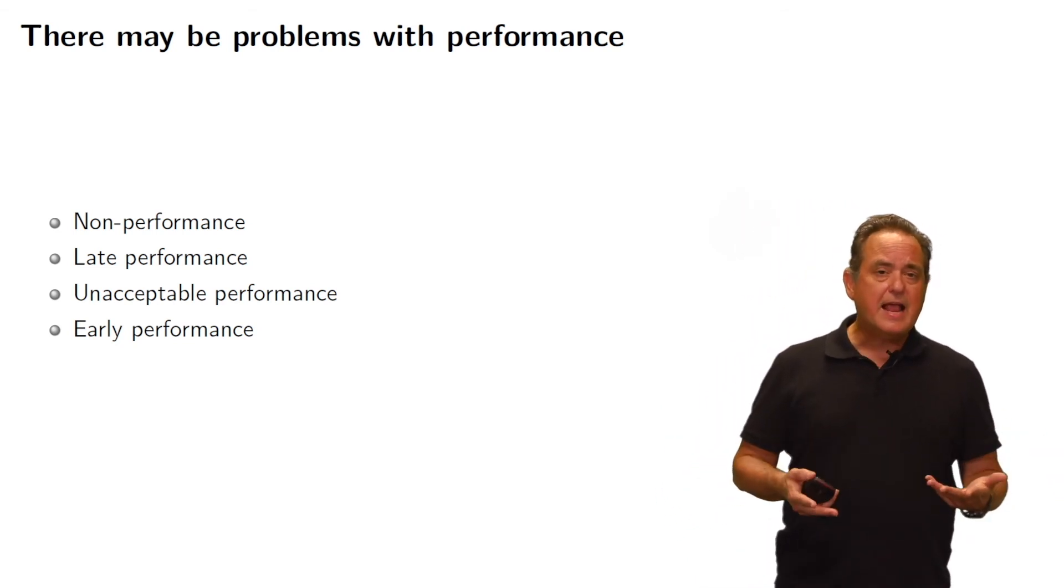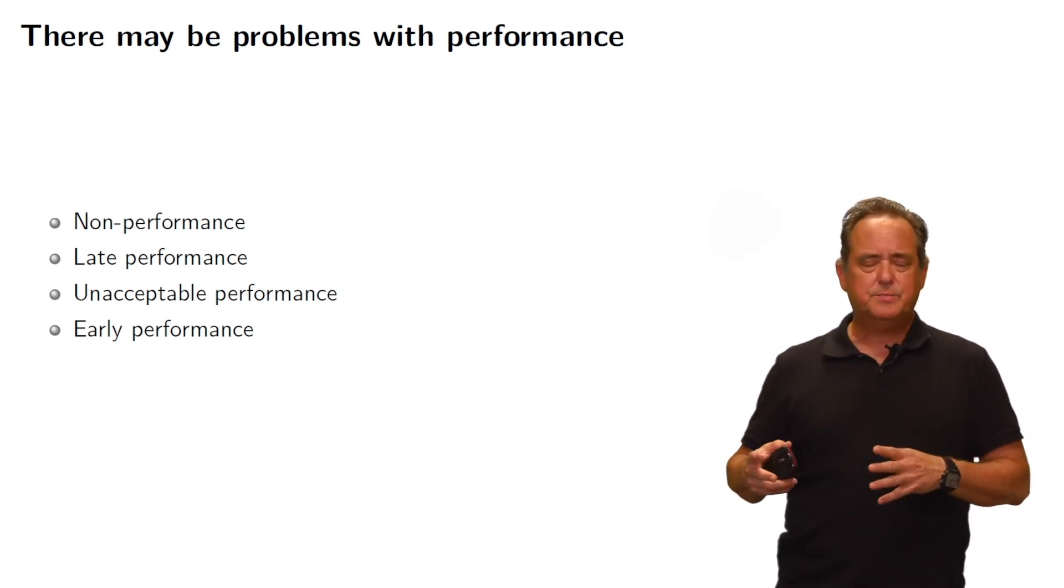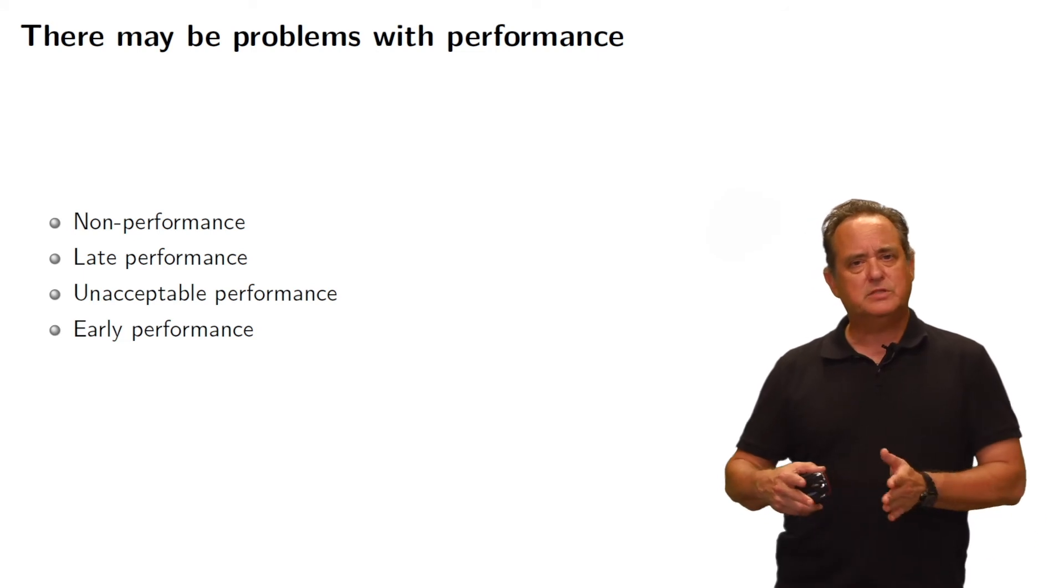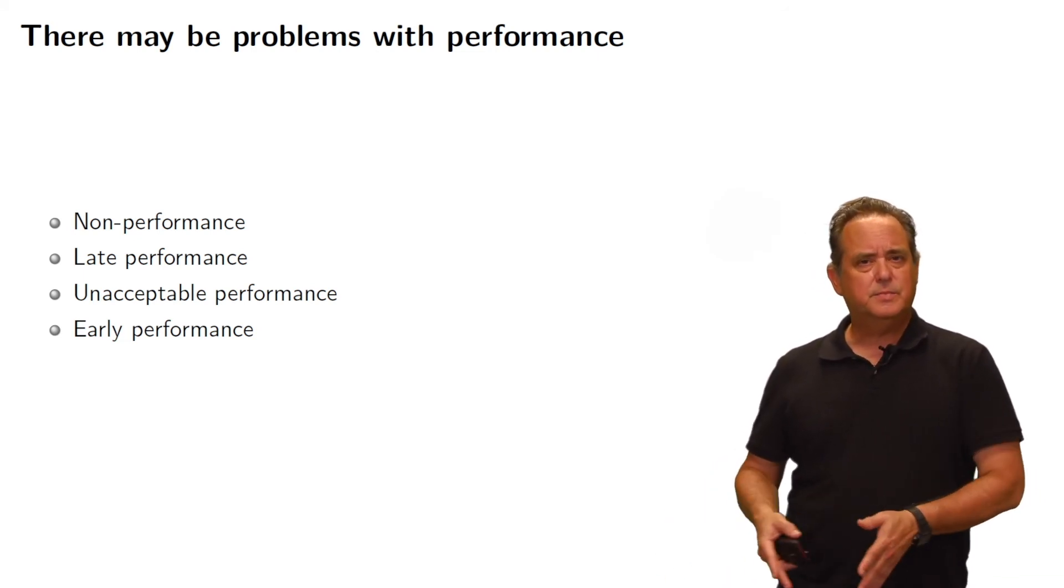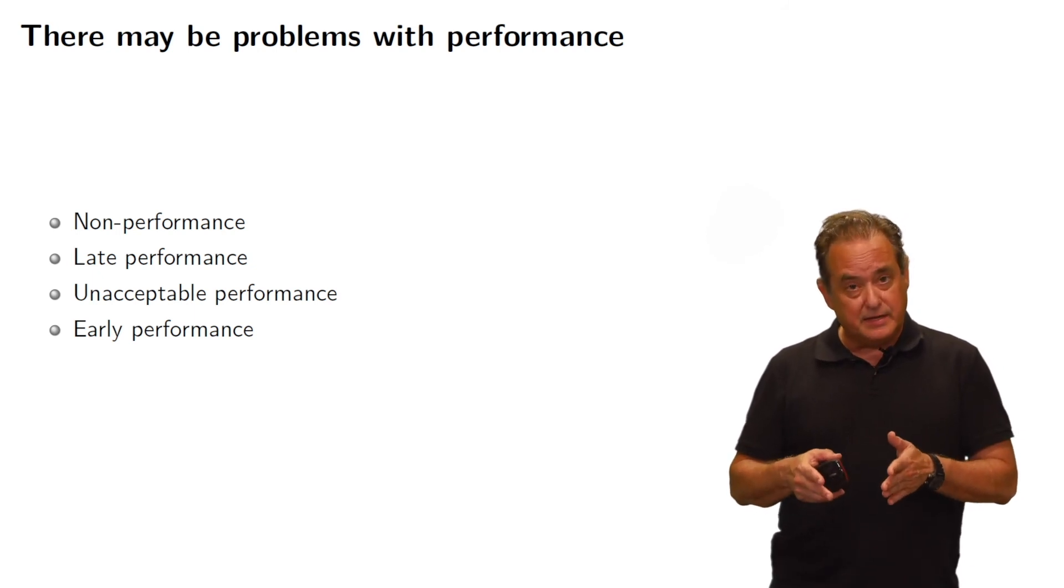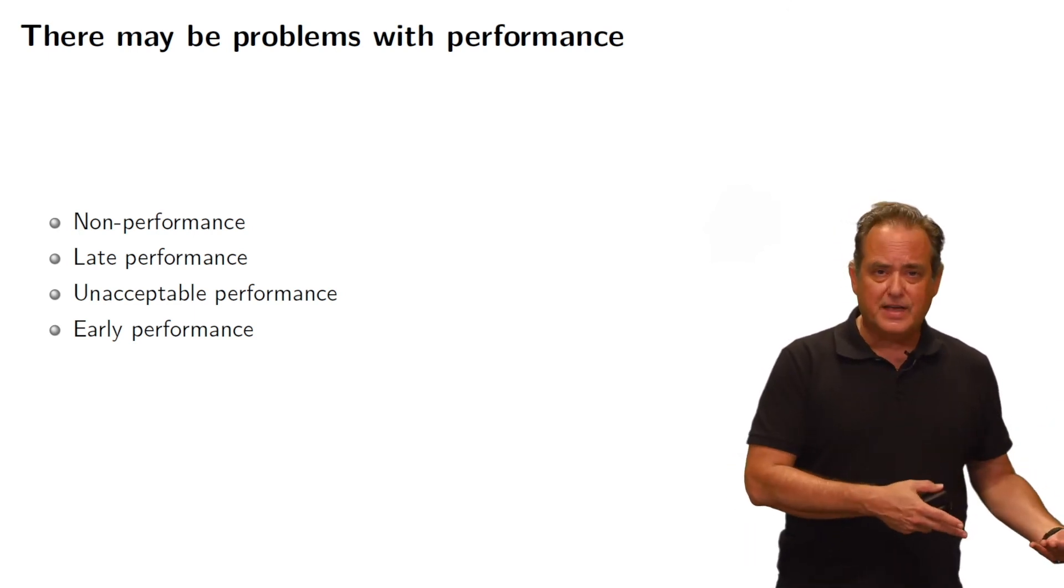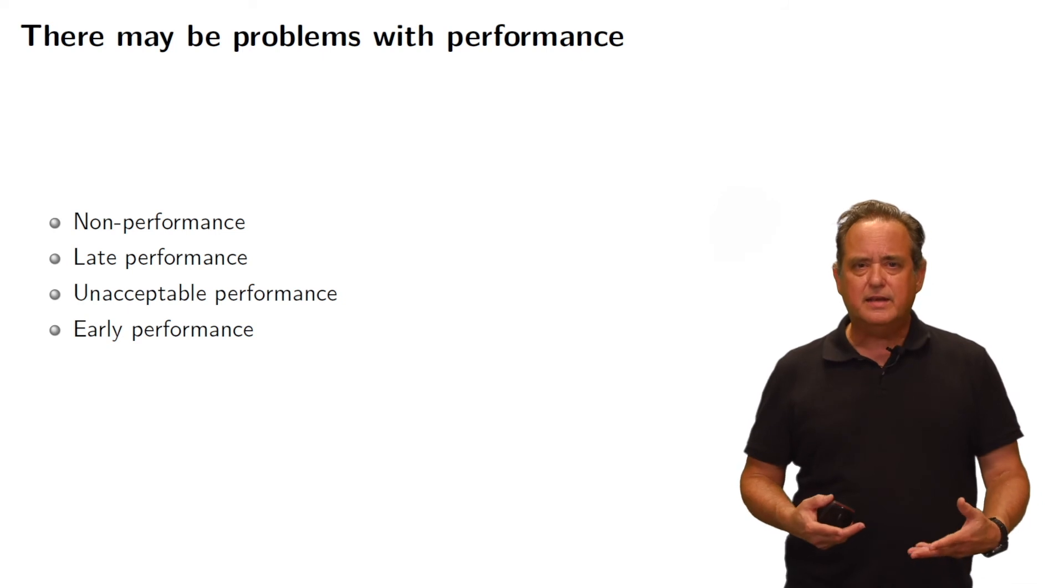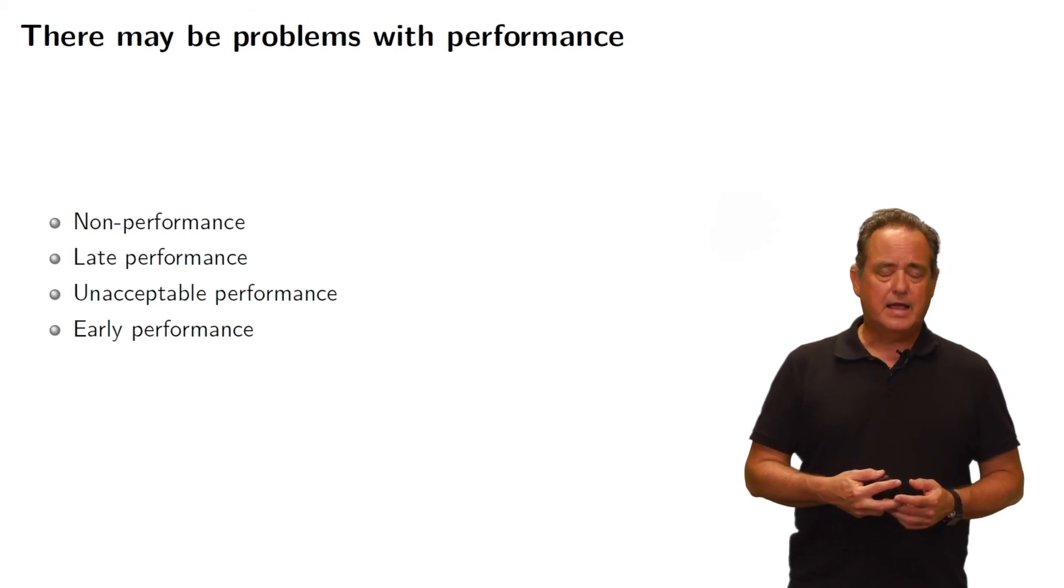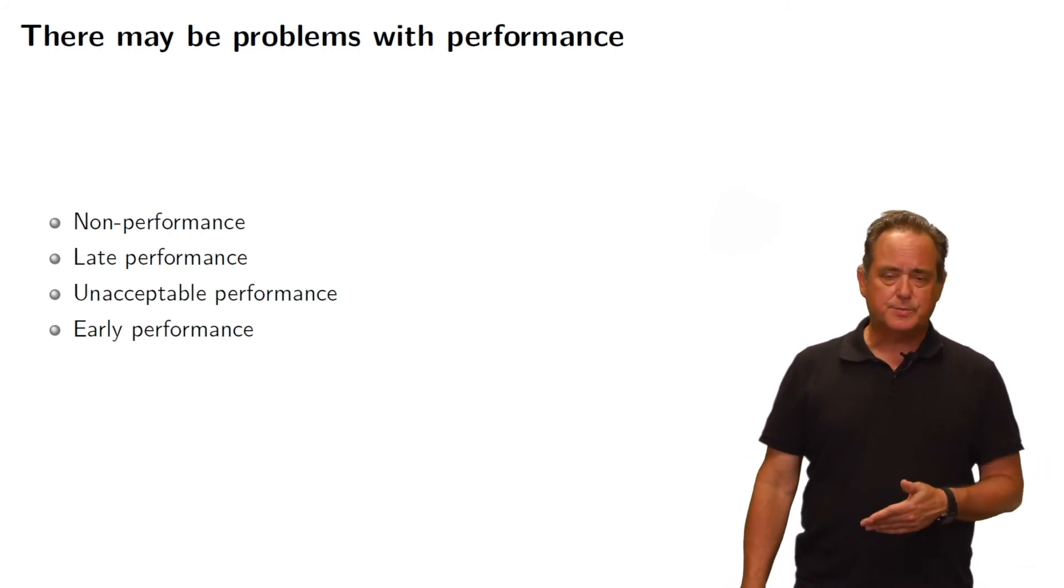And finally, early performance can be an issue as well. You see this a lot in the construction industry. When a building is being constructed, a large building, they need different materials at different times in the year or two that it's going to take to build the building. And if those materials arrive early, when they're not ready to be put into the building, that means you have to store them somewhere. You have to pay for that storage. And so there's a cost associated even with early performance. So those issues could come up from both a buyer's perspective or a seller's perspective.